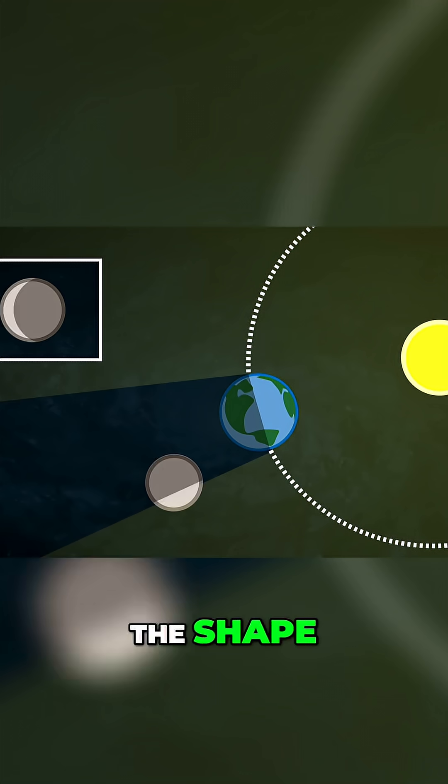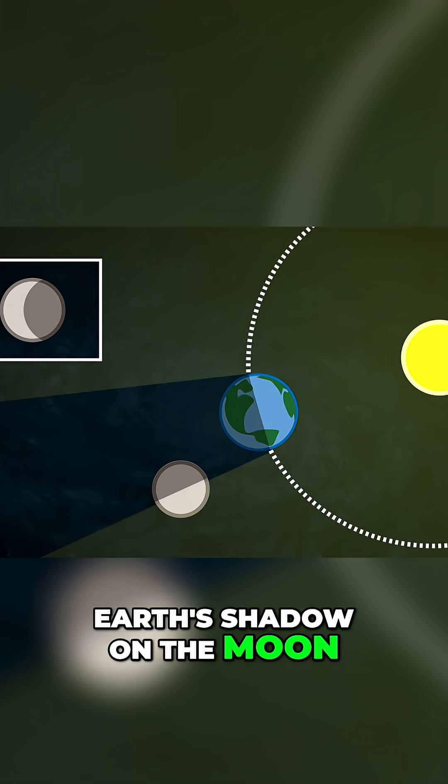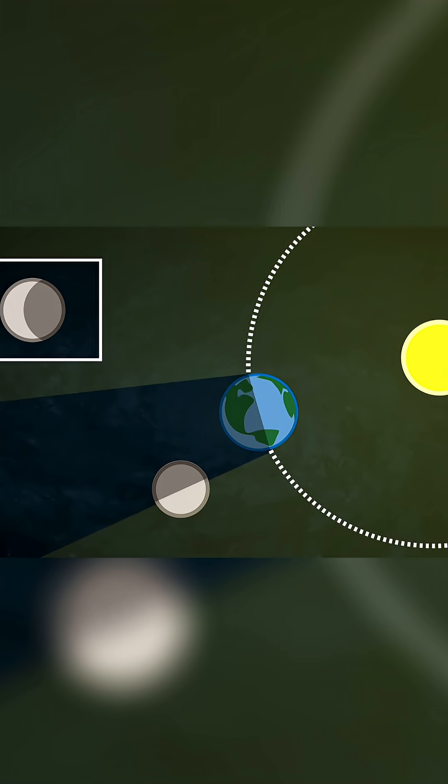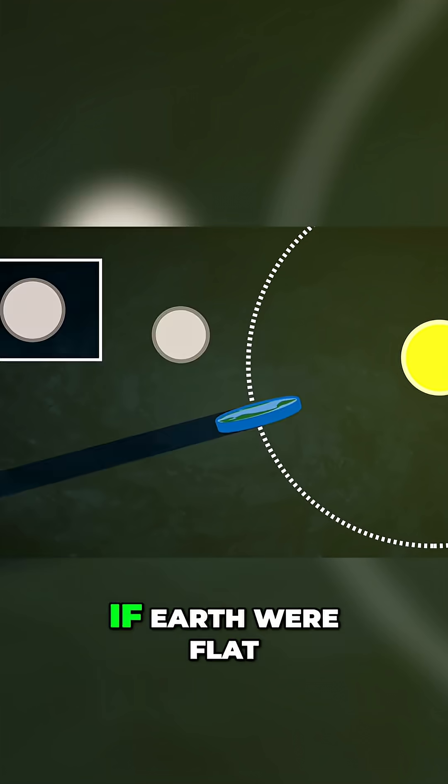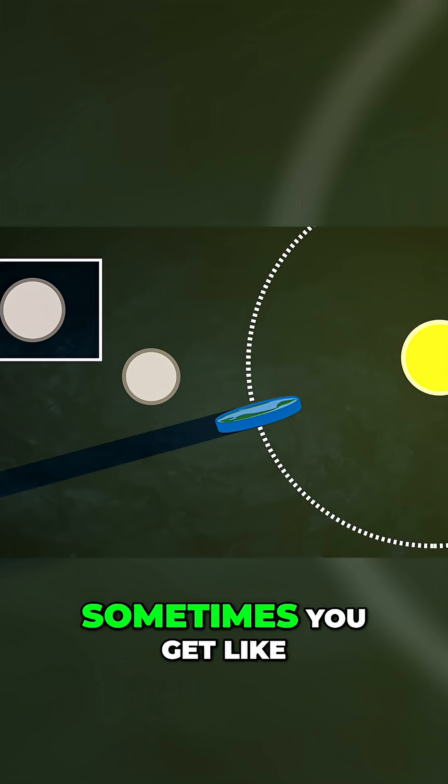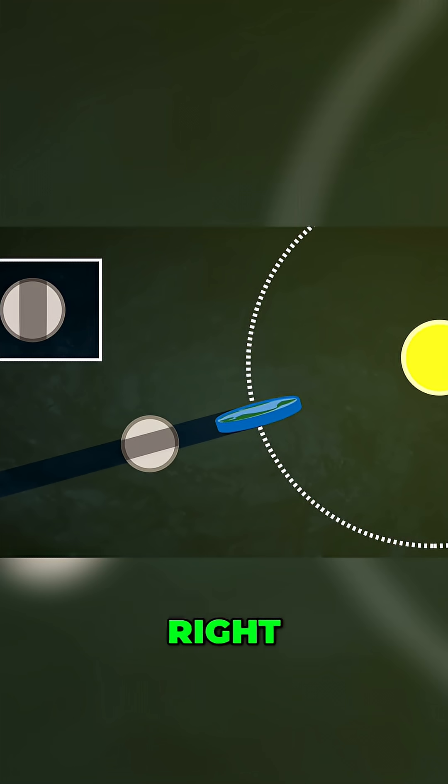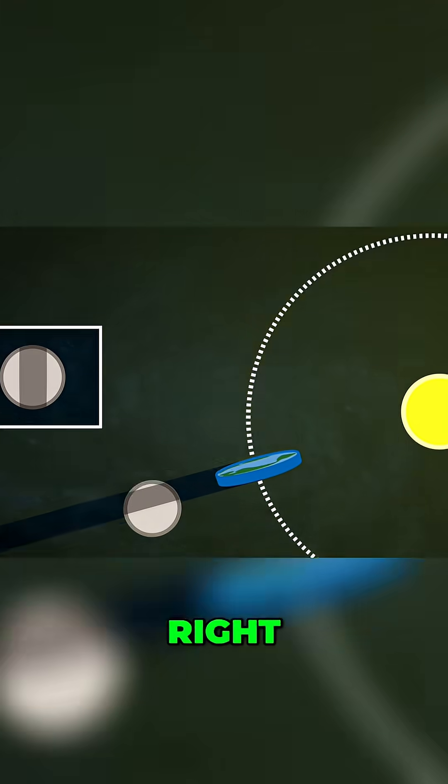And if you see the shape of Earth's shadow on the moon, it is always round. If Earth were flat, sometimes you'd get like a flat shadow, and we've never seen a flat shadow.